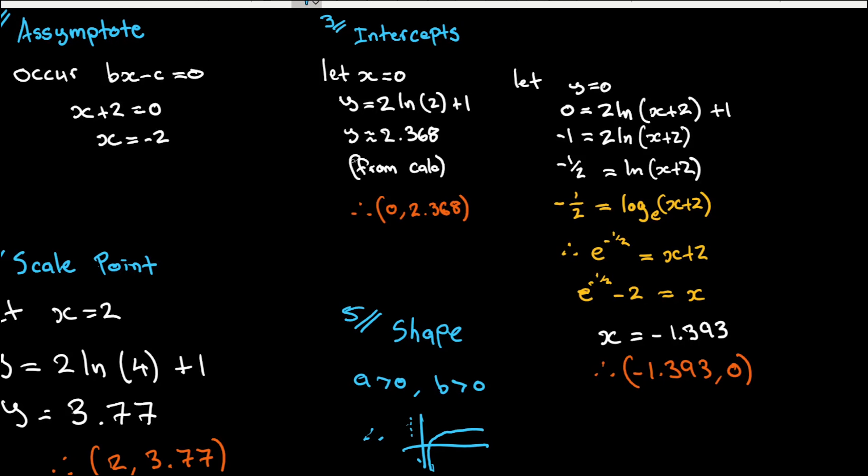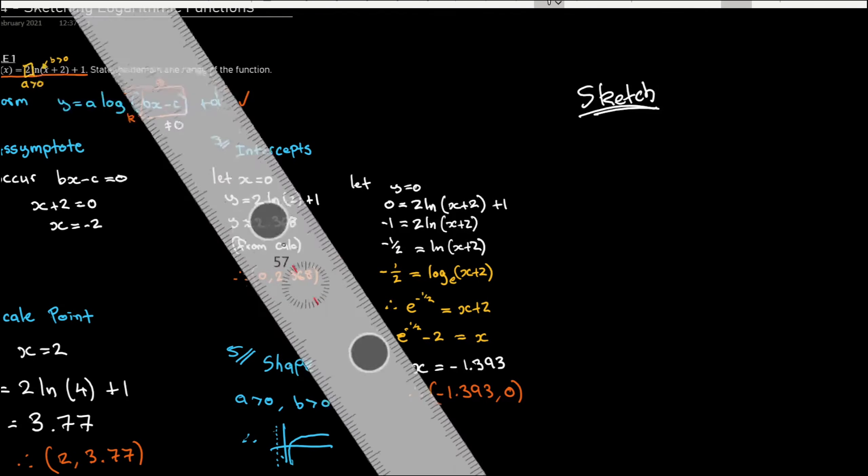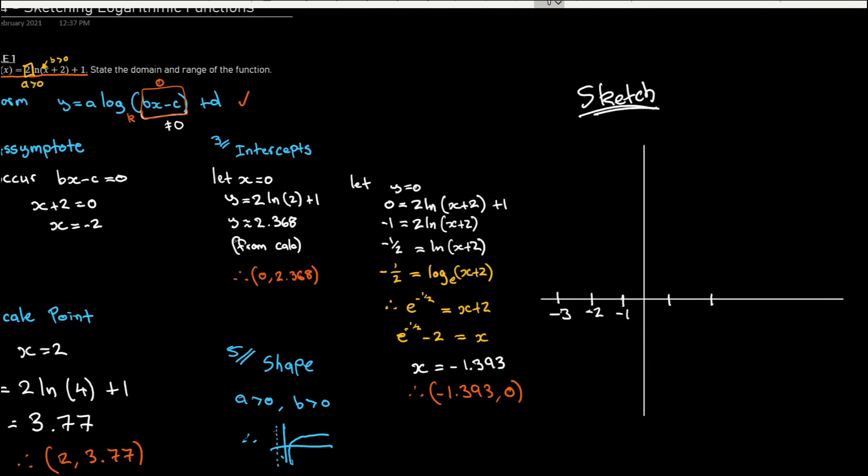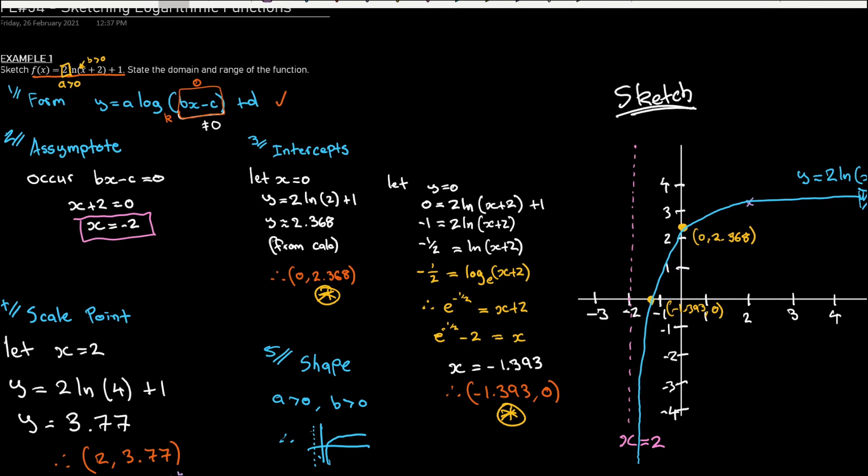But we know it's actually got an asymptote over here, and that's the general shape of it. Then I'm just going to put it together as a sketch. There I've just put all of the elements of my sketch together. And that's how we put together a logarithmic function.